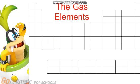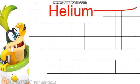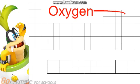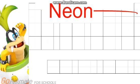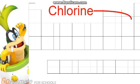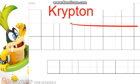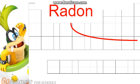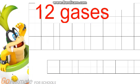Now for the gaseous elements. The gaseous elements are: hydrogen, helium, nitrogen, oxygen, fluorine, neon, chlorine, argon, krypton, xenon, radon, and oganesson. There are twelve elements that are gases.